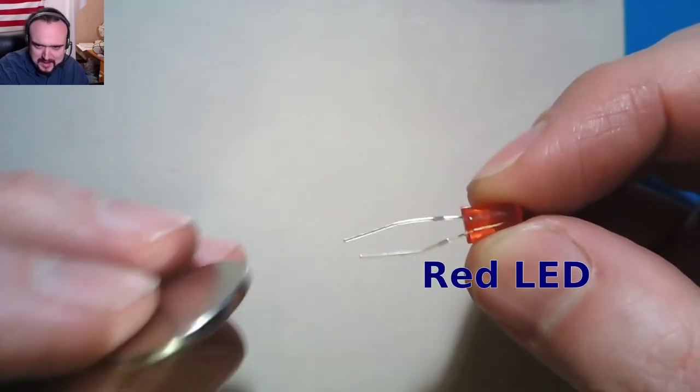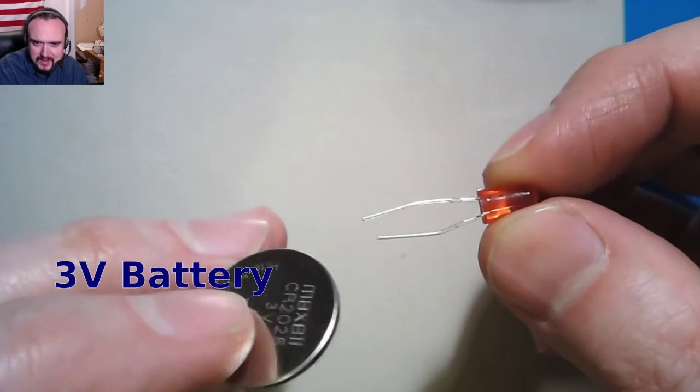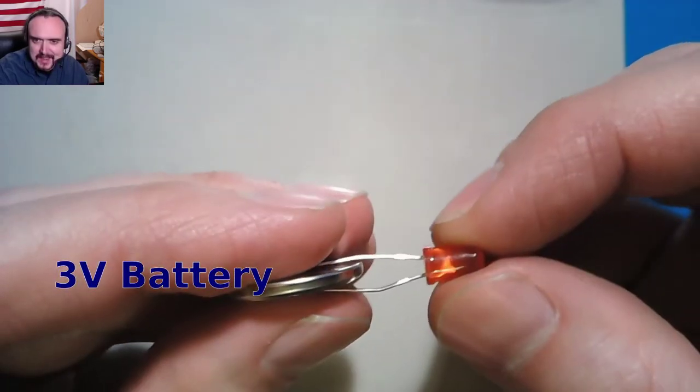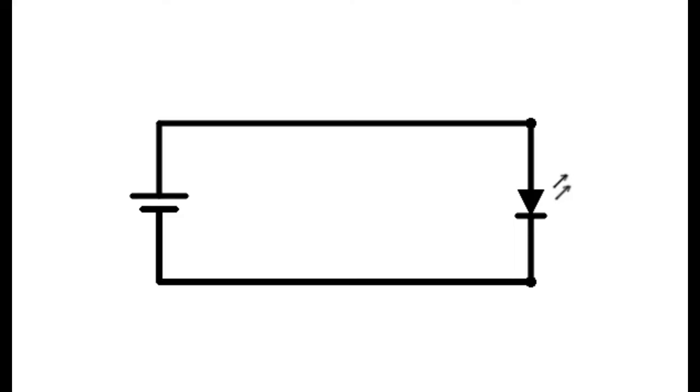This is an LED. It just takes power on the two pins. This is a little battery, just a tiny 3-volt cell. So if you connect these two together, that's a circuit.